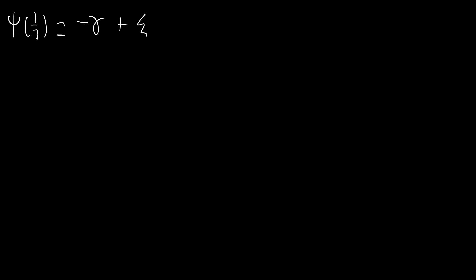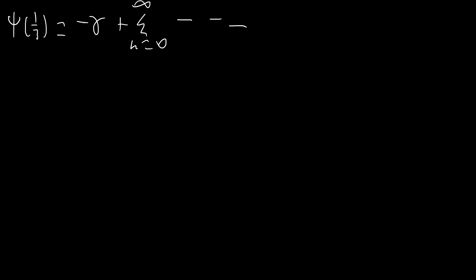We're going to use the sum representation of the digamma function. Digamma of one third equals negative gamma plus the sum from n equals zero to infinity of one over n plus one minus one over n plus one third. Next, we're going to multiply by three on the top and bottom in both of these fractions, which gives us one over three n plus three minus one over three n plus one, with a factor of three brought outside.